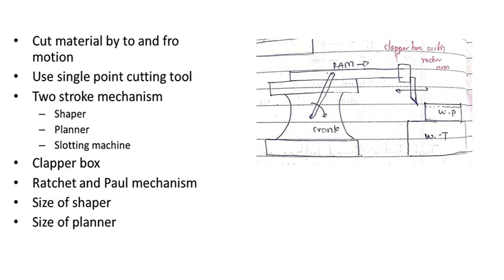Shaping machines are generally used for light duty works and small work pieces, while planing machines are used for heavy duty works and larger work pieces. In a shaping machine there is generally a single tool. We cannot fit multiple tools on the same RAM due to dynamic imbalance. A planing machine can have multiple tools simultaneously since the tool is stationary and the work reciprocates, making it suitable for mass production and heavy cuts.